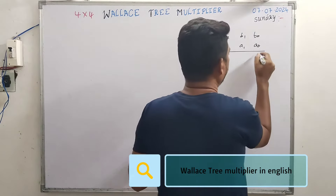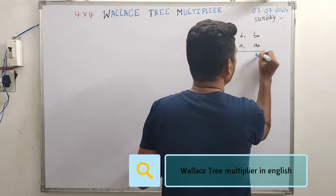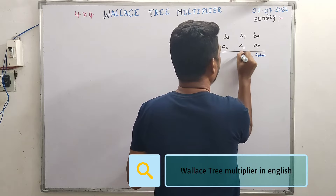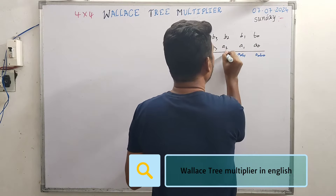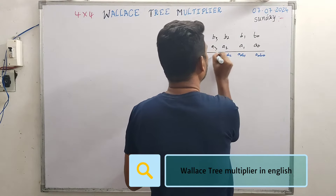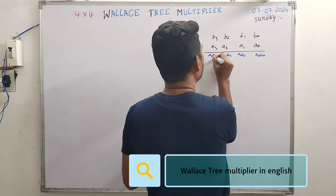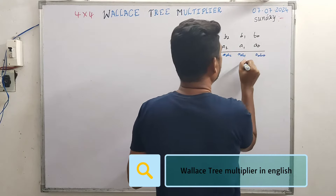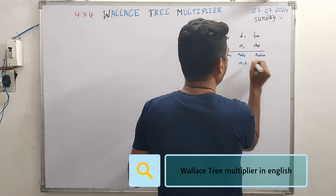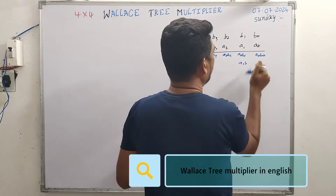It's well known that we have a0·b0, a0·b1, a0·b2, a0·b3, and for a1 we have an offset over here.